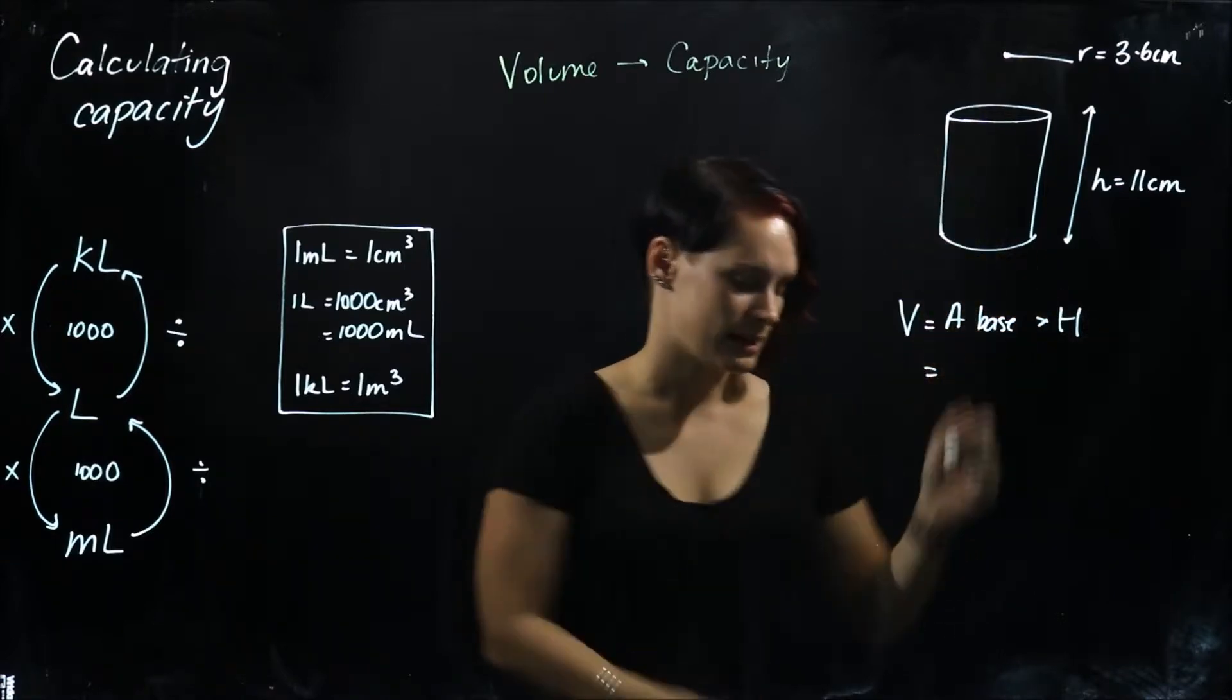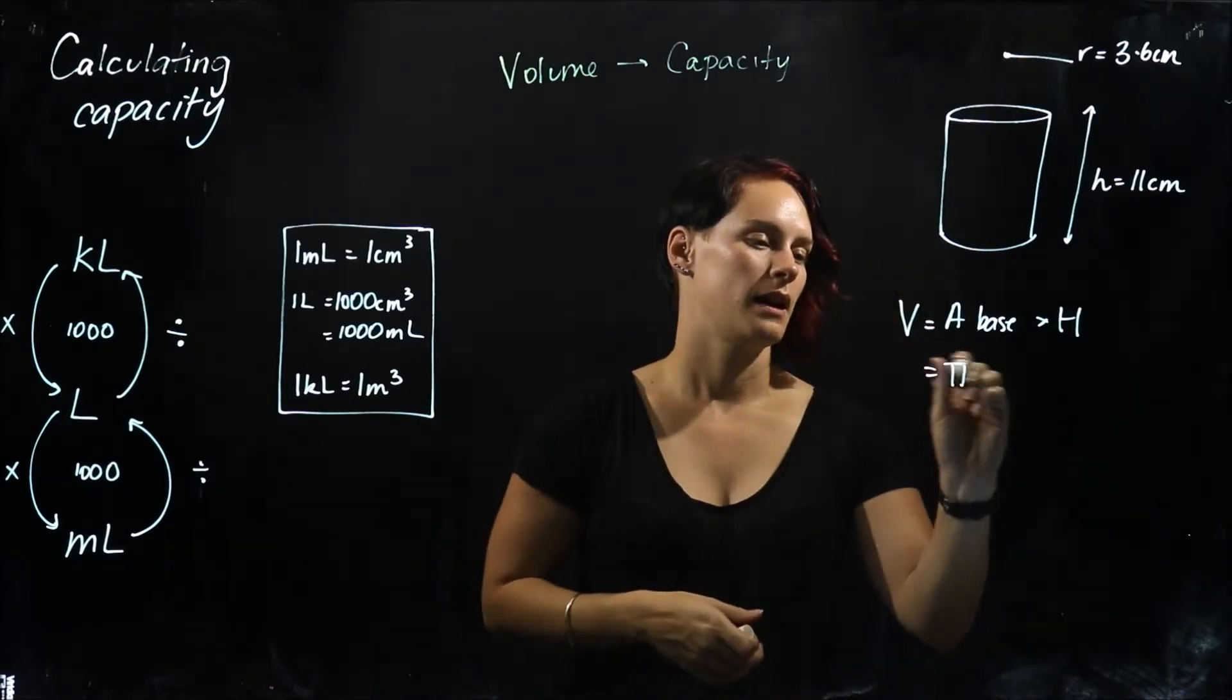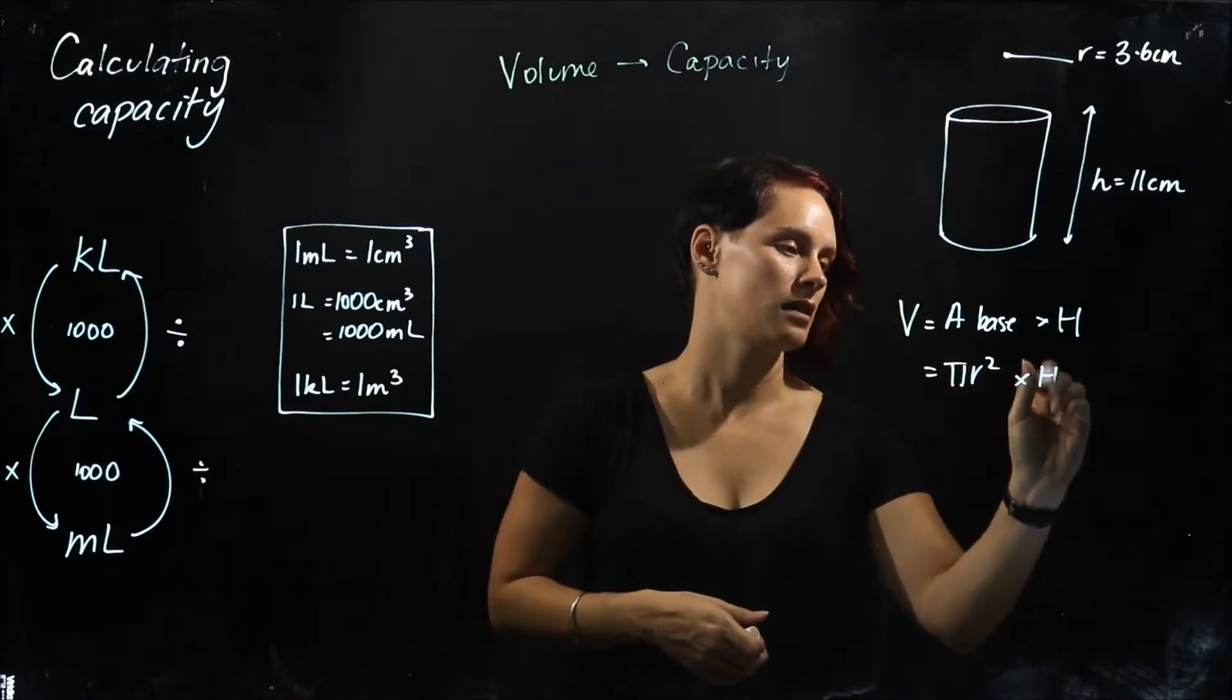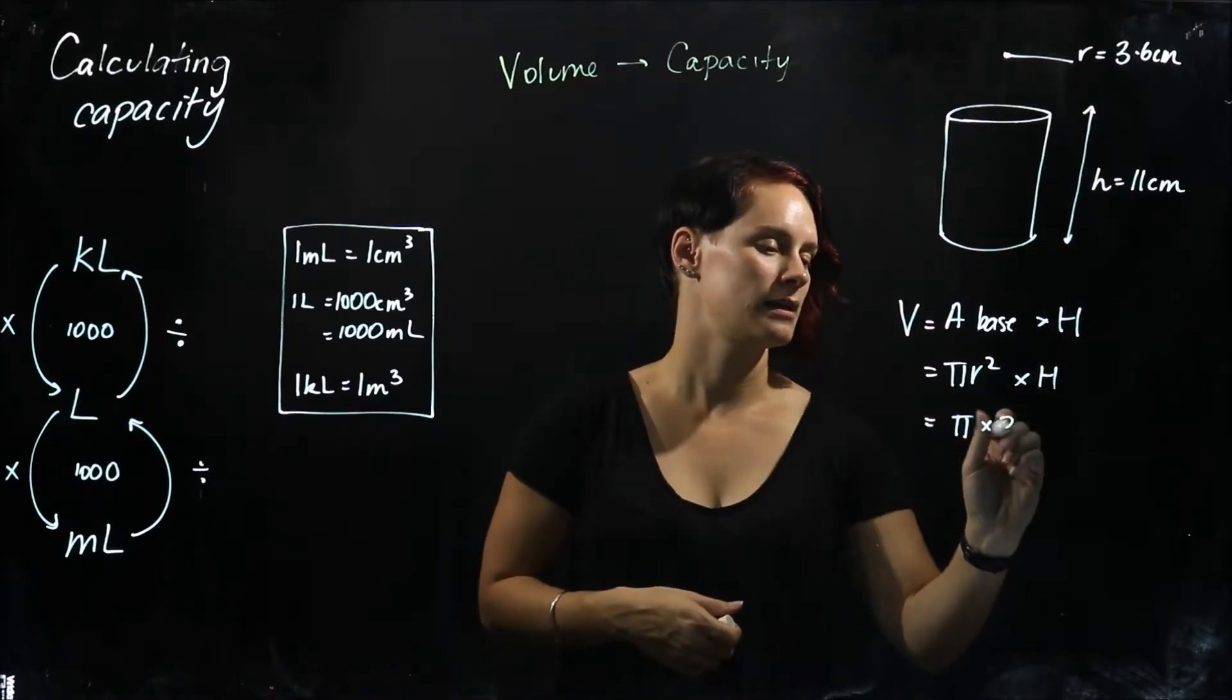My area of the base - the base of this shape is a circle. Remembering that the area of a circle is π r squared, and I'm going to times by our height, so it will be π times my radius squared.